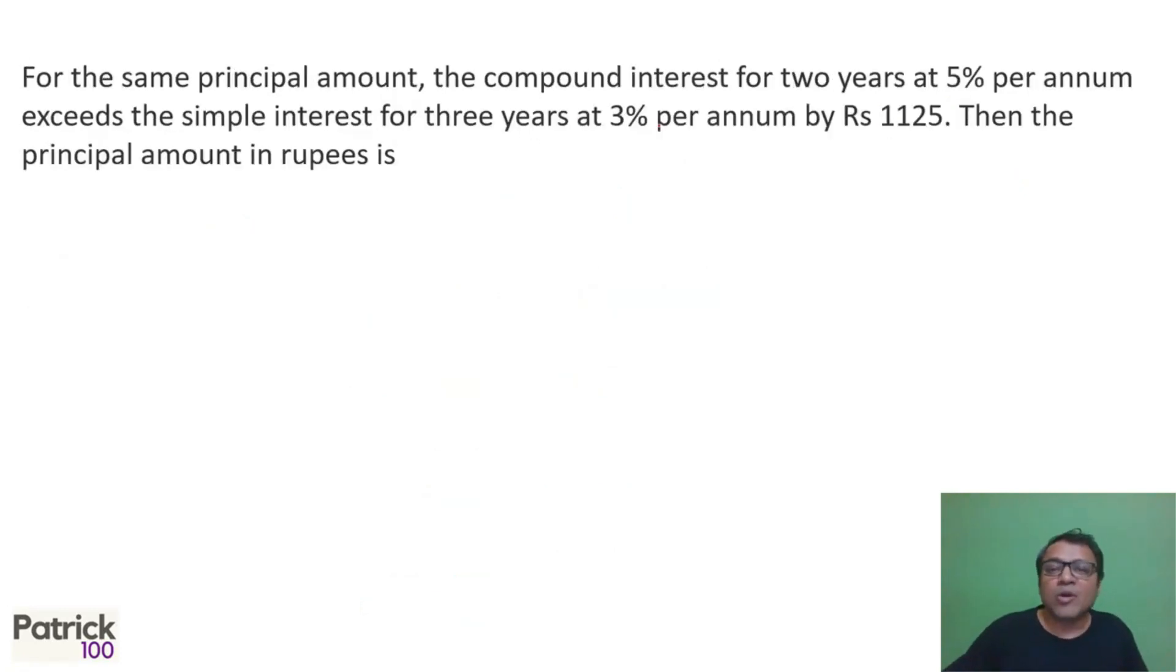For the same principle amount. So here I normally assume 100 rupees. 2 years compound interest will give you 10.25. So first year gives you 5, second one gives you 5.25 because I'm getting 5% of 5 also. So that means the total interest I get is 10.25 interest or 1.05 square. You can use that. Whichever way you get 10.25 interest. Simple interest 3% for 3 years, for 100, you get 9 rupees.